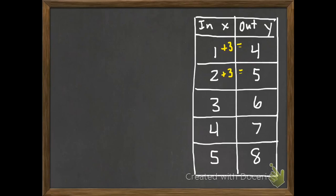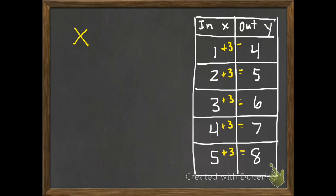It looks like we've got a pattern, but let's make sure we go through all of them. 3 plus what equals 6? Still 3. 4 plus what equals 7? 3. Looks like we've found a pattern — 5 plus 3 equals 8. So we need to write the equation. We have our x, and whatever we put in for x, we are adding 3, and that equals our output y. So our equation is x plus 3 equals y.